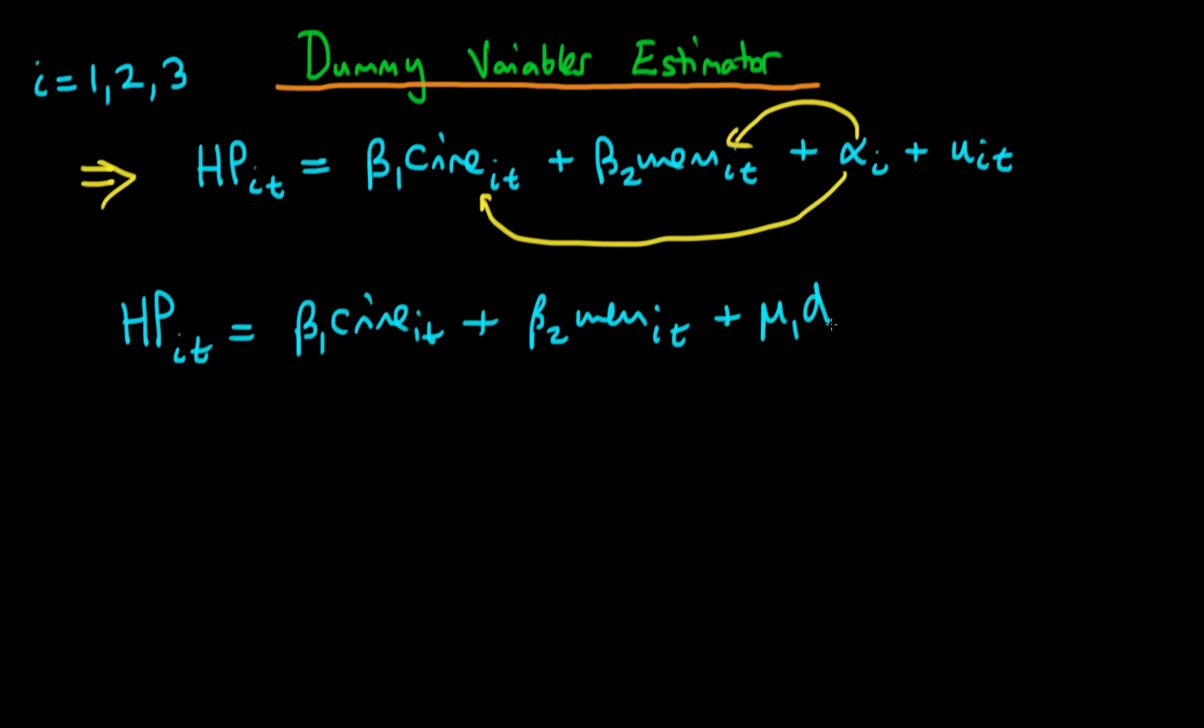So then our equation might look something like this. So we have mu1 times d2 plus mu2 times d3 plus finally our idiosyncratic error ui t. And d2 here is a dummy variable which takes on a value of 1 if i equals 2 and it takes on a value of 0 otherwise.